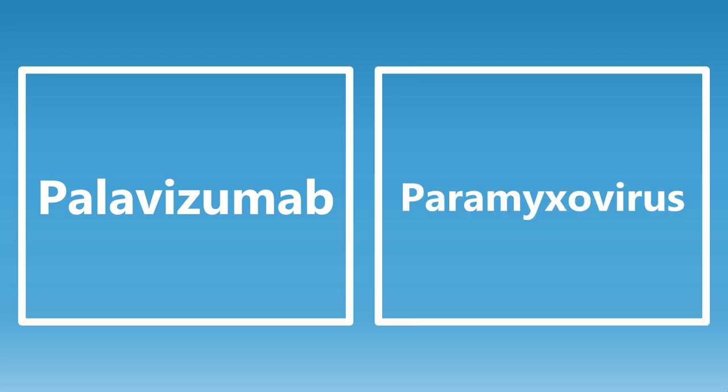The monoclonal antibody palivizumab — the association to make here is with a paramyxovirus. This monoclonal antibody, palivizumab, is used to prevent pneumonia caused by RSV in premature infants. So you want to know that palivizumab is for premature infants to fight off paramyxovirus. Really important.